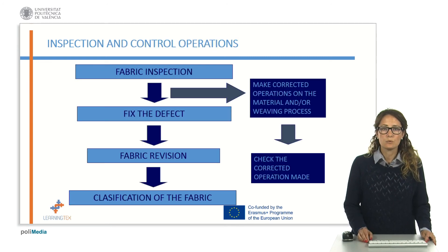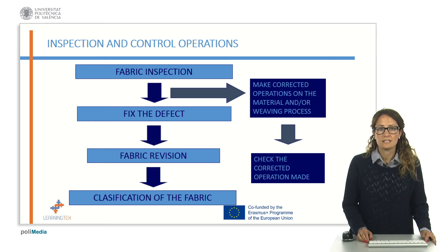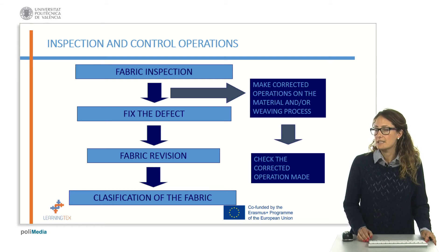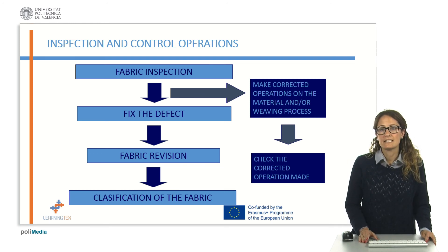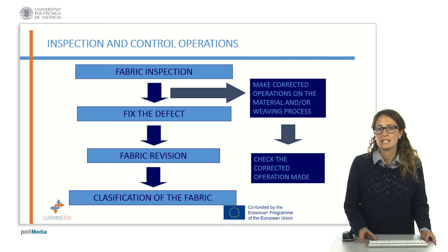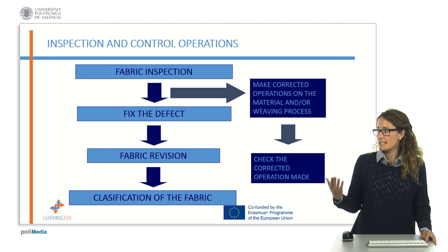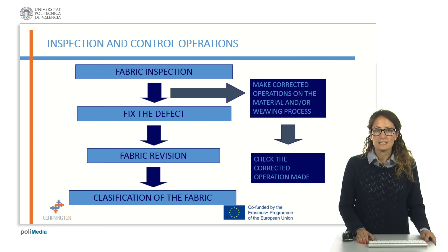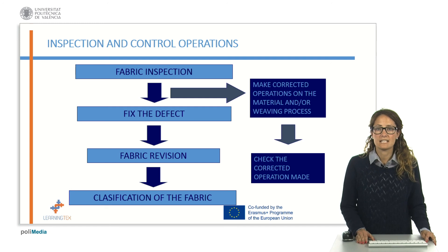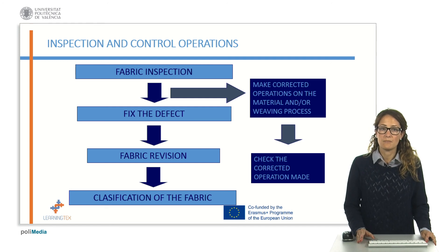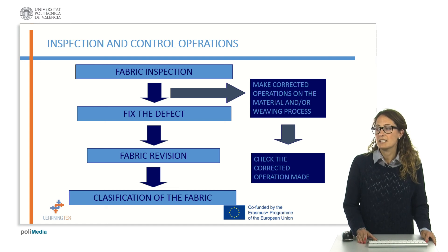In this slide we can see the steps performed to carry out the inspection. First of all, the inspection is done. If there is some defect, it is fixed and corrective operations are made on the material or process in order to avoid producing the same defect. After fixing the defect, another revision of the fabric is done, and depending on the number or type of defects, the fabric is classified.